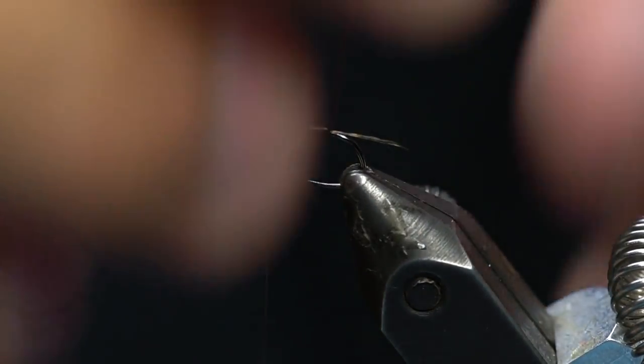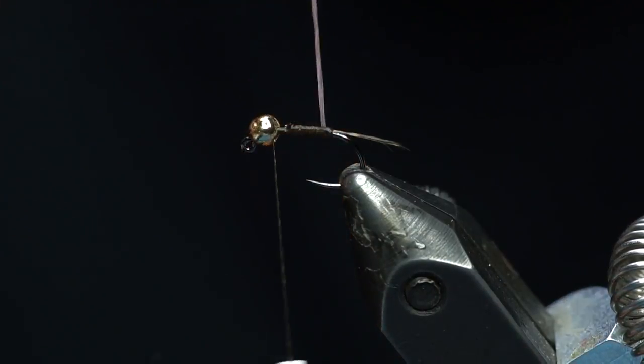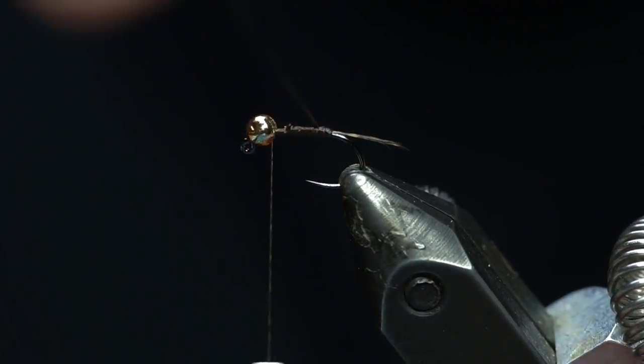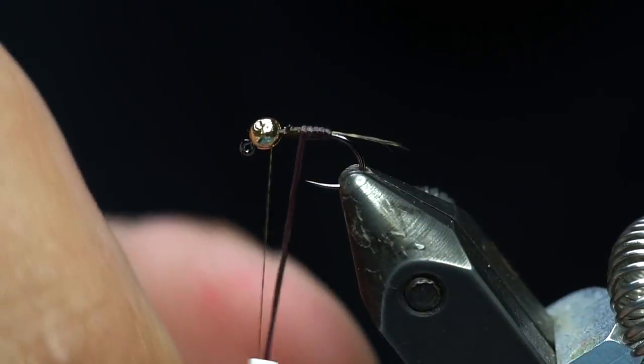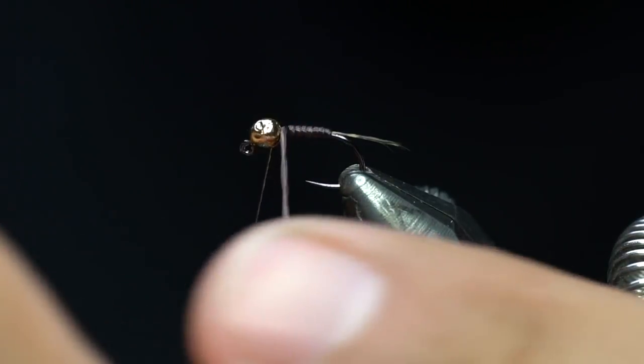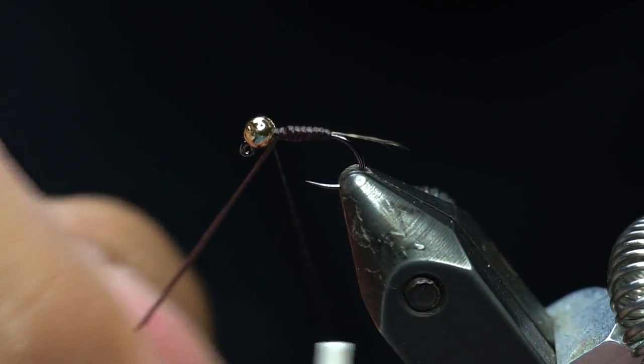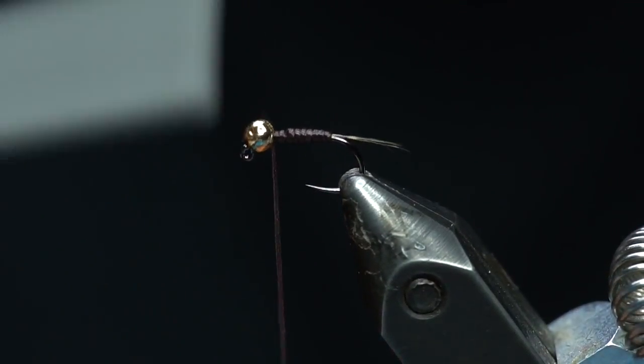And then what I'm going to do is I'm going to start off with lots of tension and every wrap just kind of release a little bit. And that helps build a nice little taper and gives you a nice segmented body look.